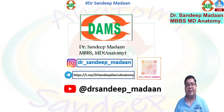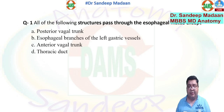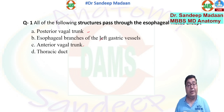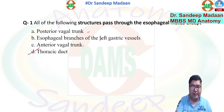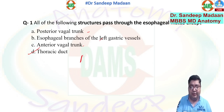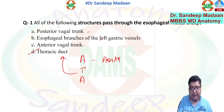Hello everyone, this is Dr. Sandeep Madan. Let us discuss ABT questions. The question is: structures passing through the esophageal hiatus are all except. We know these three pass through the esophageal hiatus along with the esophagus itself, but the thoracic duct is the answer because it passes from the aortic opening. The aortic opening carries: A for aorta, T for thoracic duct, and A for azygos vein.